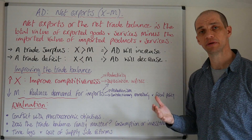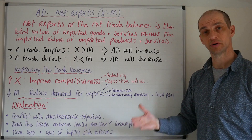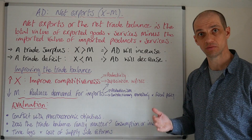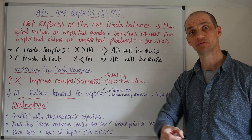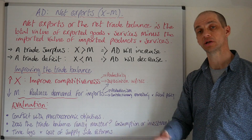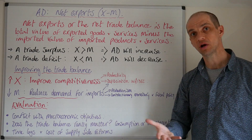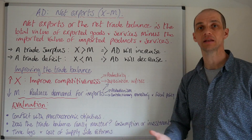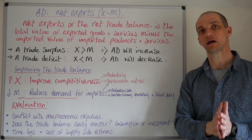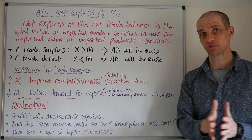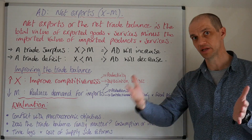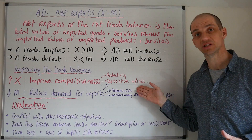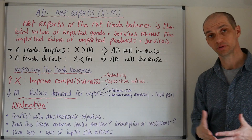It may also be the case — as you may have heard in the news regarding China and the US — that protectionism is undertaken. The most common example is tariffs, where a tax is imposed upon imported goods, raising their price and artificially making domestic firms more competitive in their home market. However, there's the threat of retaliation, and the vast majority of countries have signed up to the WTO, whose rules run contrary to such protectionist measures.